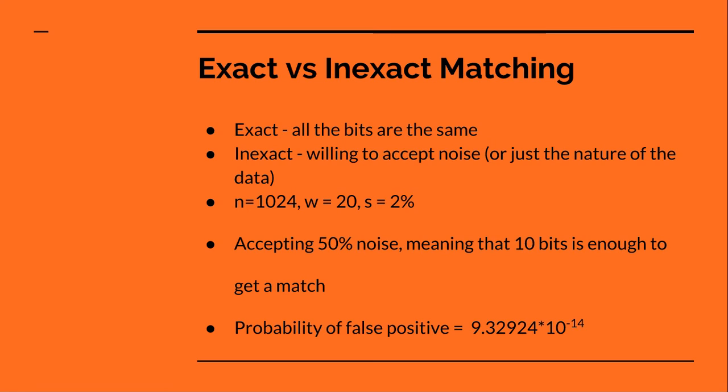If we do that with a sparse distributed representation where N is 1,024 and W is 20, giving a sparsity of 2%, and we allow 50% noise by just matching 10 bits, we get a probability of false positive of 9 times 10 to the negative 24. That's a very low number. And what that actually means is that if you make a mistake, because the bits are meaningful, the mistake you make is not going to be a big deal — it's going to be something very similar to the correct answer.